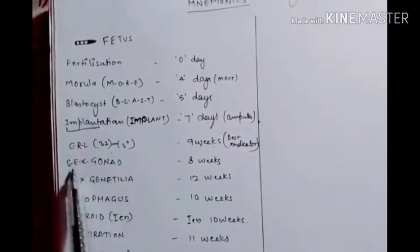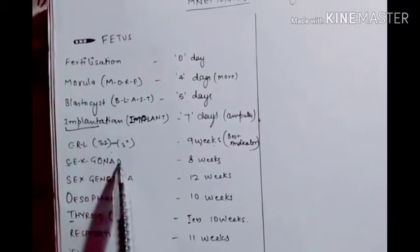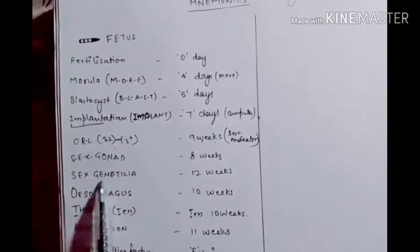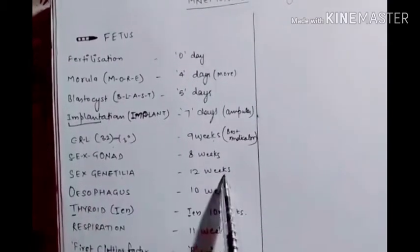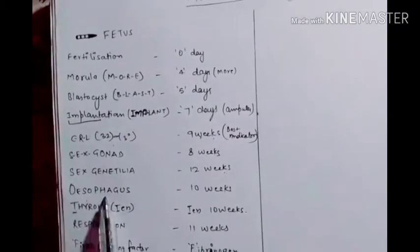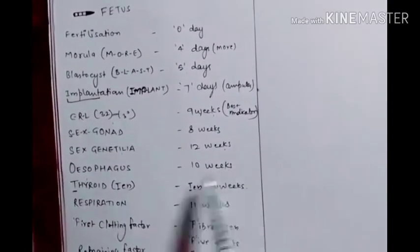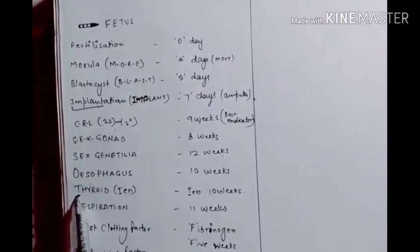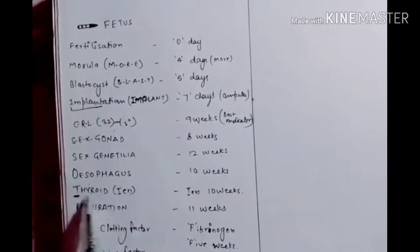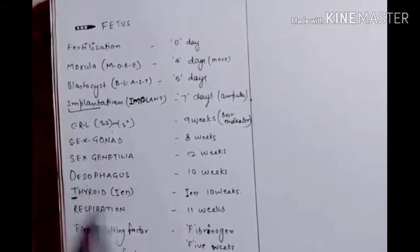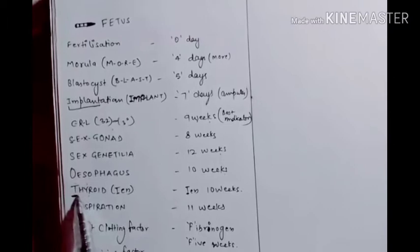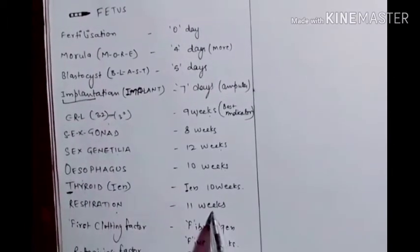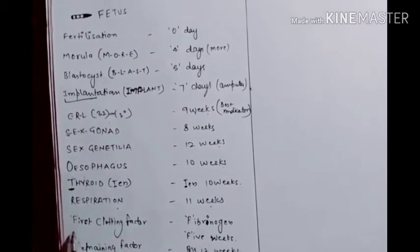Sex gonads: count the letters — one through eight — occurs at eight weeks. Sex genitalia has 12 letters, so it occurs at 12 weeks. Esophagus has 10 letters, so it occurs at 10 weeks. Thyroid: 'T' is the first letter and stands for 10, so thyroid occurs at 10 weeks. Respiration has 11 letters, so it occurs at 11 weeks.